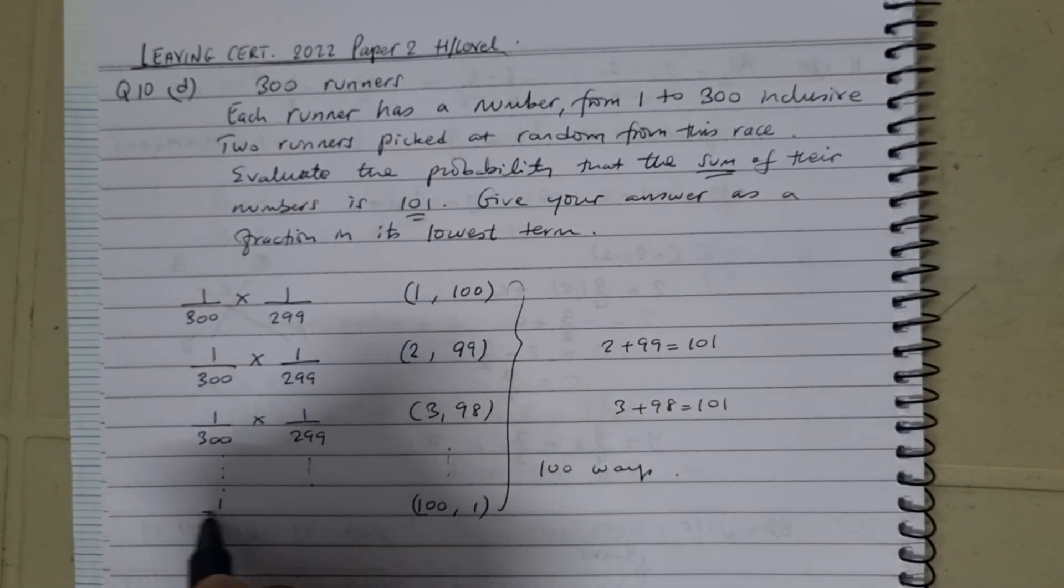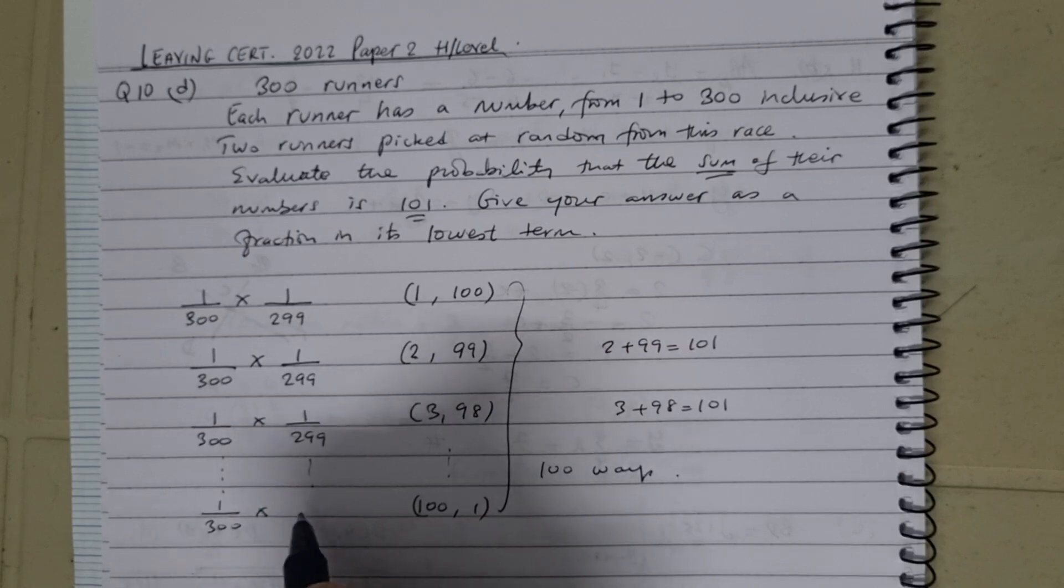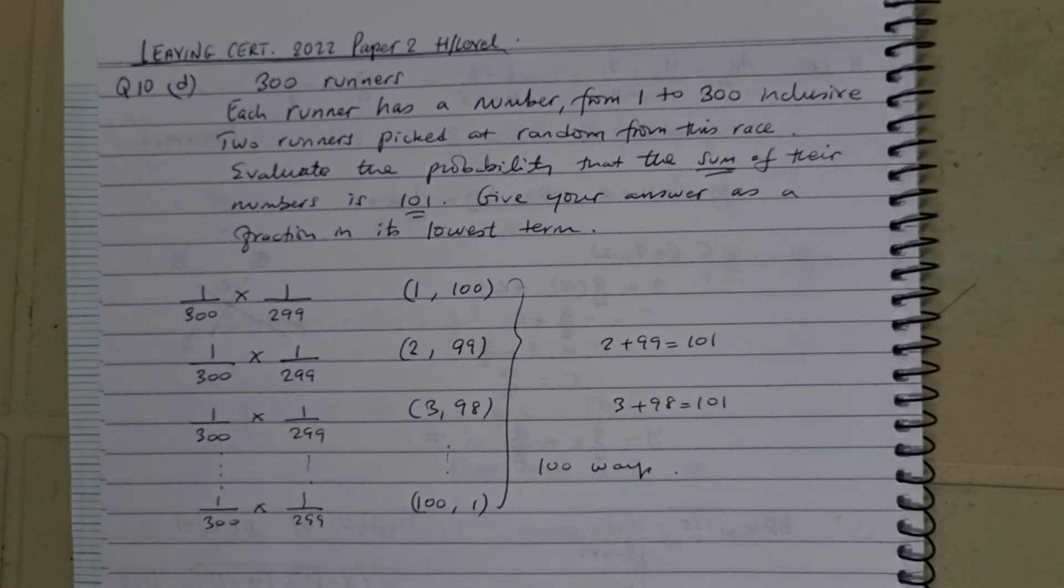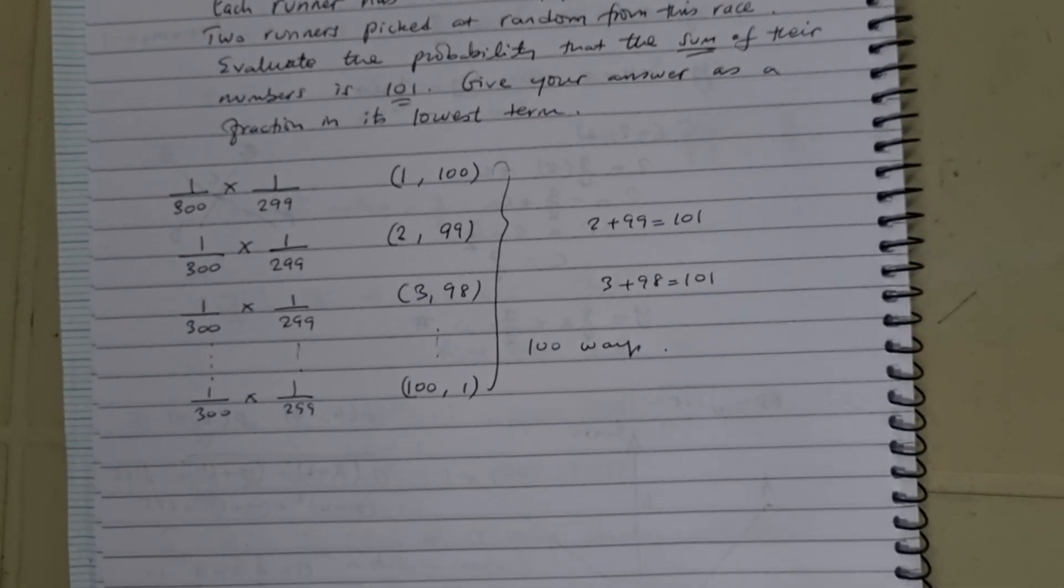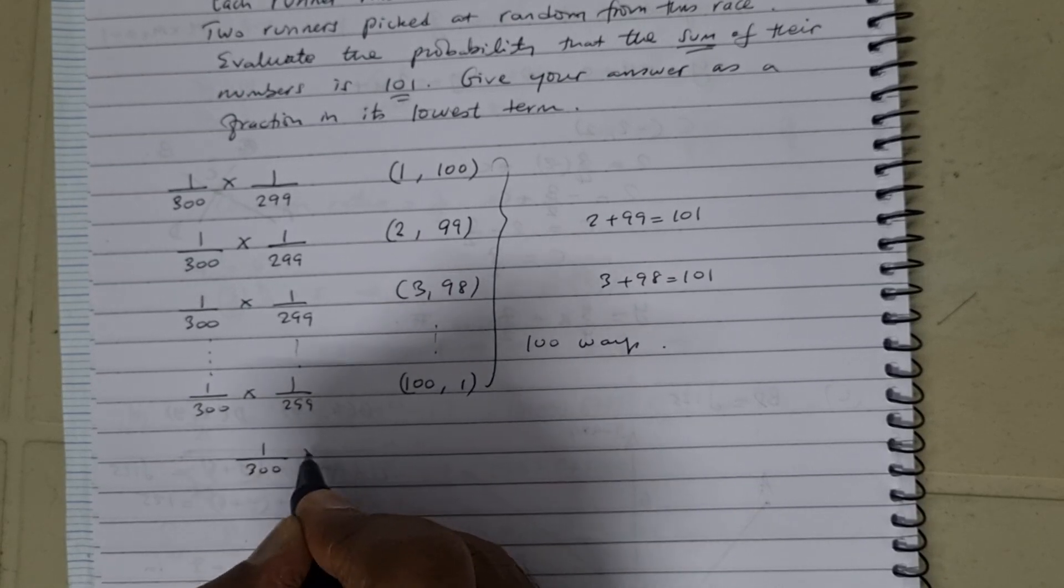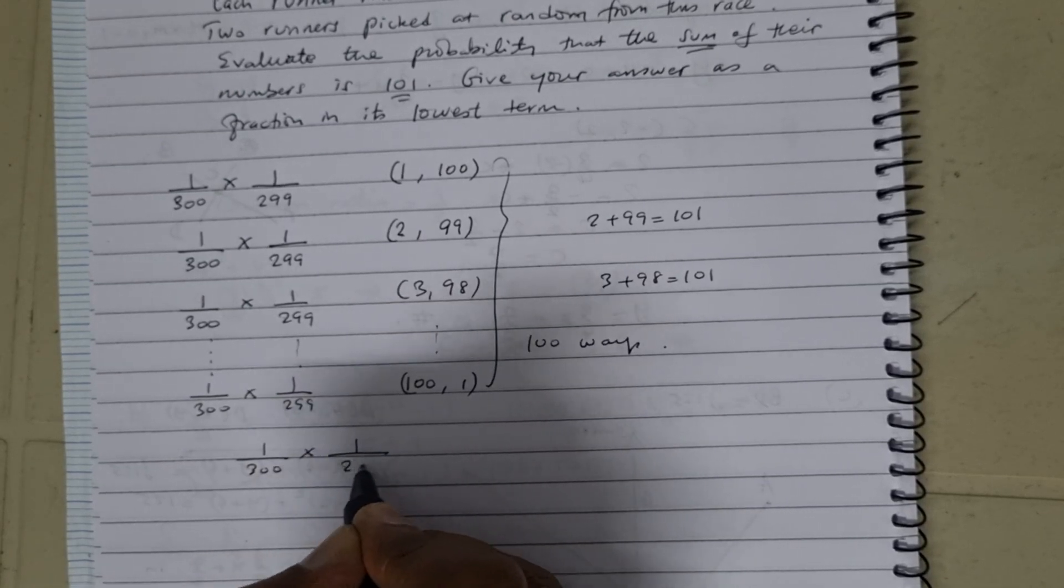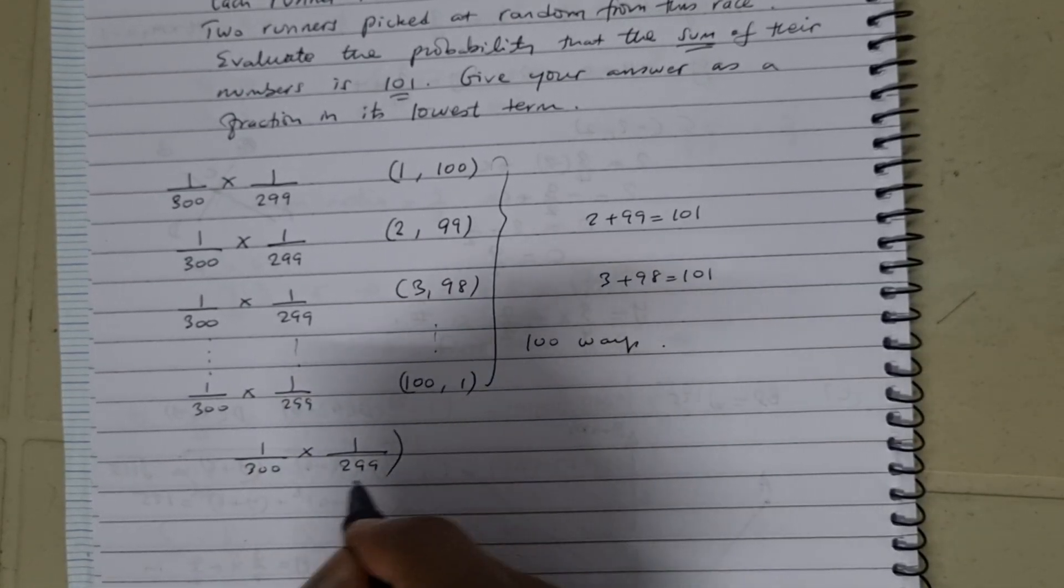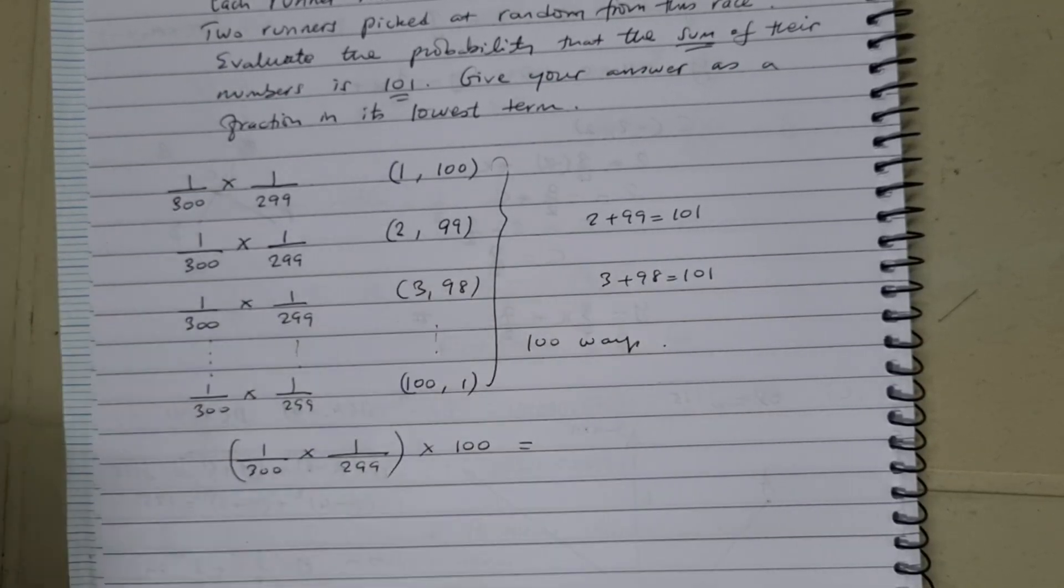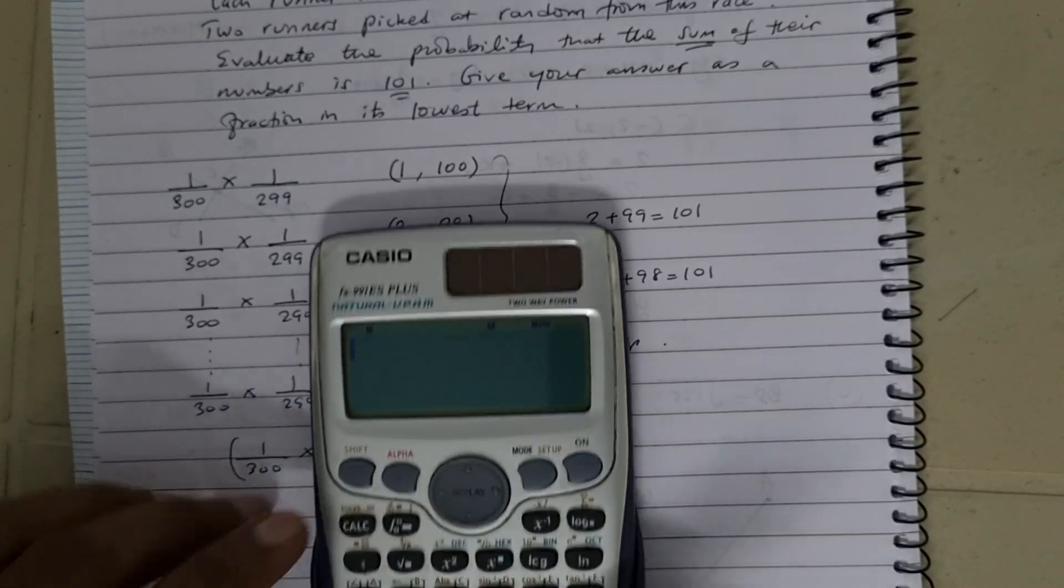And again, we see this is 1 over 300 times 1 over 299. So how do we work out this probability? What we're going to do is take 1 over 300 times 1 over 299, and of course you multiply by 100. So if you do that in the calculator...